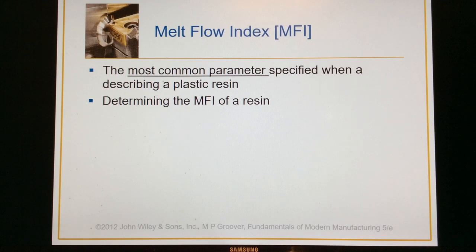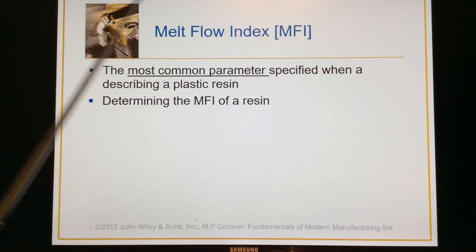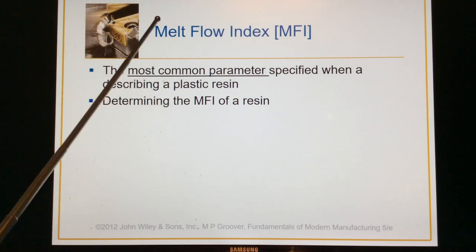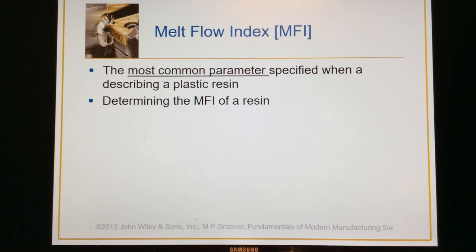The way they determine MFI is they take a certain amount of material, heat it up, and then extrude it through a small orifice onto a flat plate over a certain amount of time, then stop and weigh it. If the plastic has a very high MFI — meaning a lot of volume came out — that means it has a significantly lower viscosity. Something with a low MFI number means very little came out, meaning very high viscosity. A melt processing injection or extruder company needs to know this based on what kind of mold they're using.